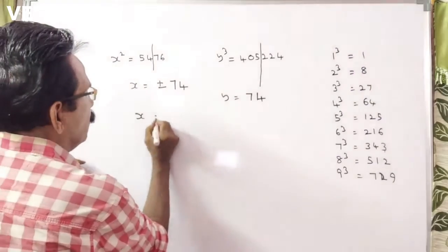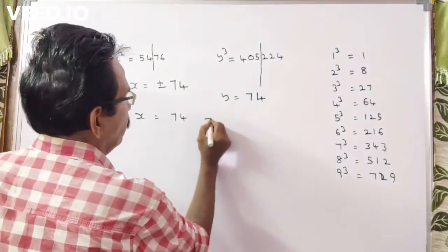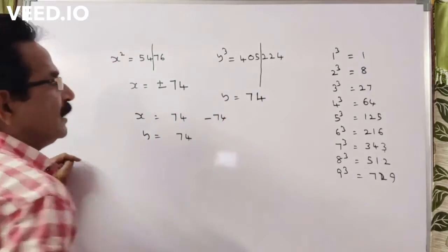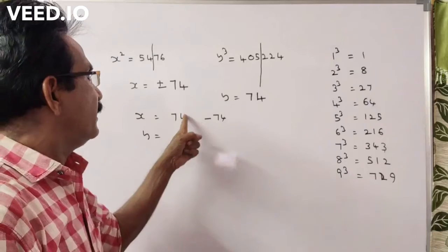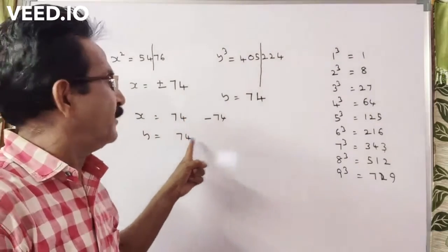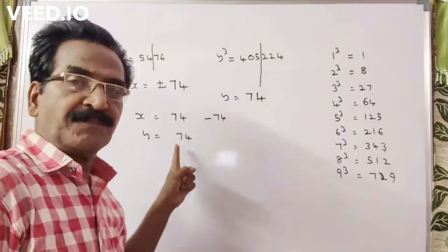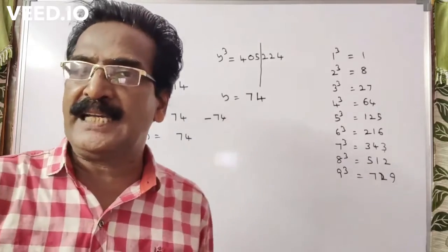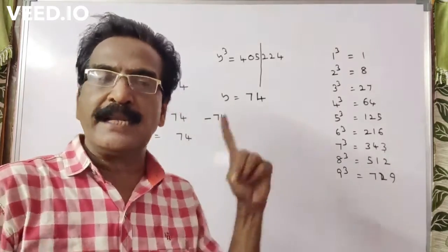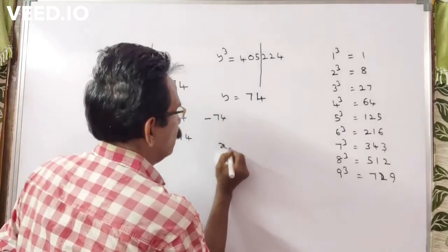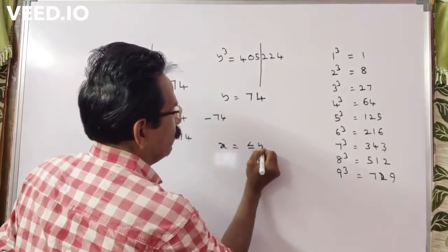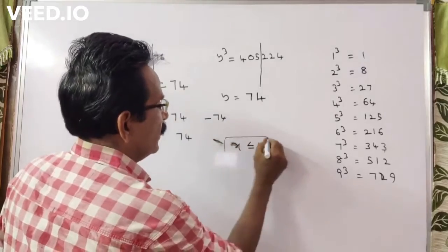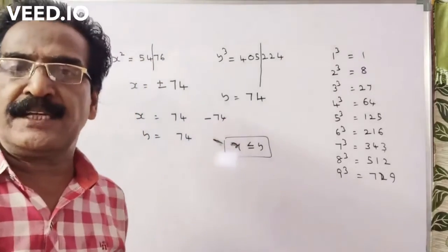So x is equal to plus 74 or minus 74, and y is equal to 74. Now let us compare the values. 74 equals 74, and minus 74 is less than 74. So the final answer is: minus 74 less than or equal to x, which is less than or equal to y. Okay friends, thank you, have a nice day.